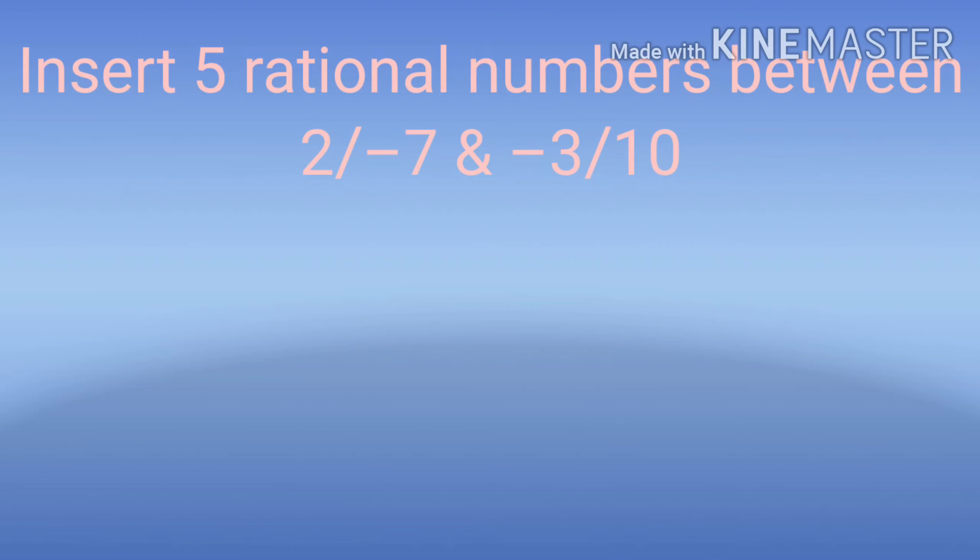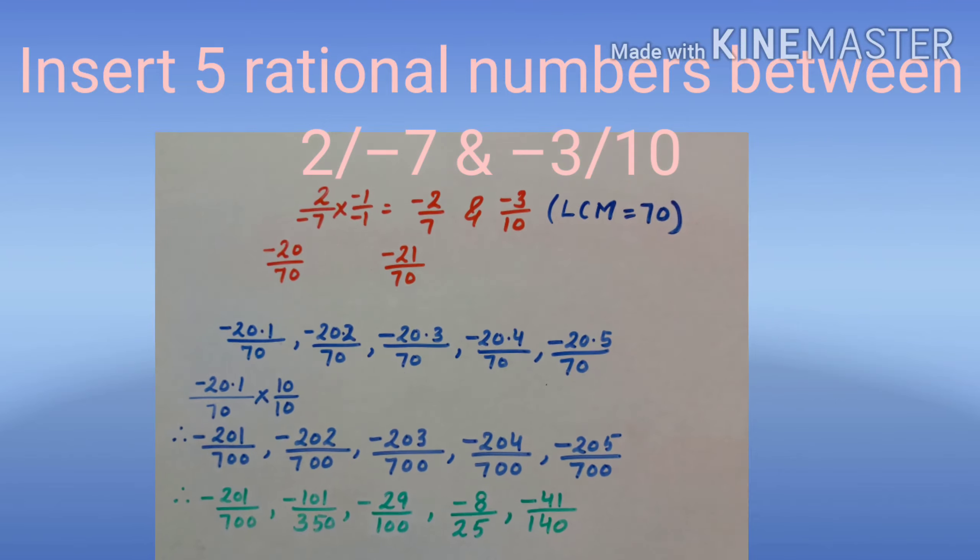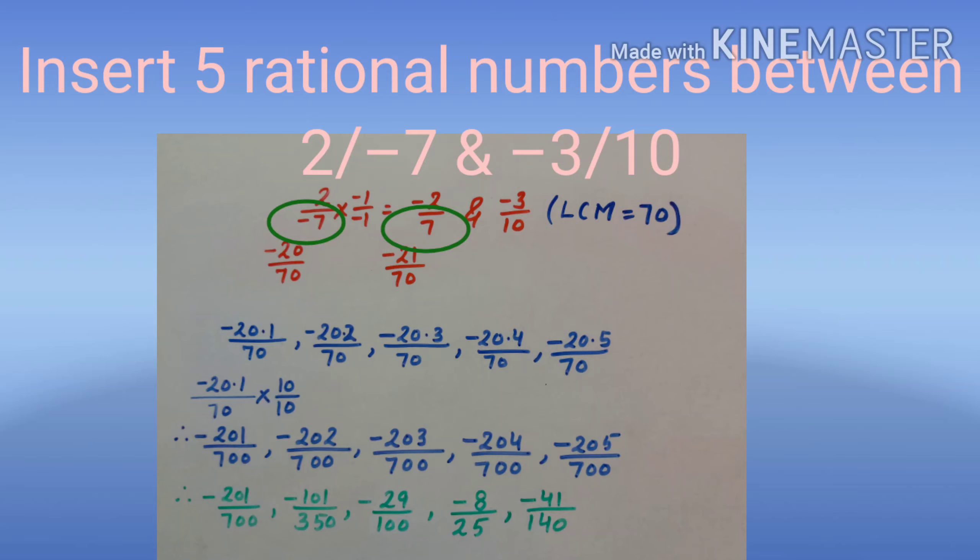For example, we need to insert five rational numbers between 2 upon minus 7 and minus 3 upon 10. First of all, we will make the denominator positive. So, 2 upon minus 7 equals minus 2 upon 7.